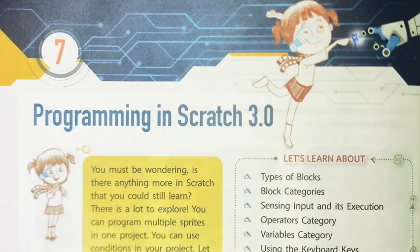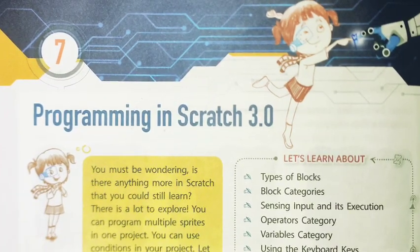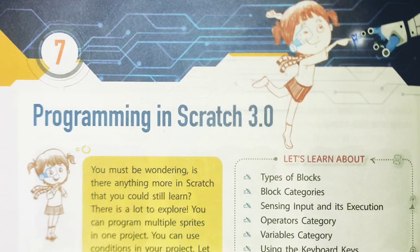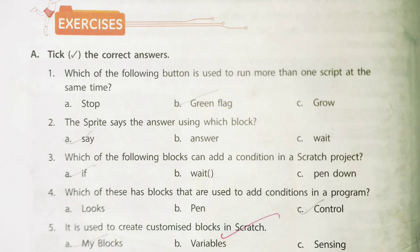Hello friends, today we will do chapter number 7, Programming in Scratch 3.0. Part A: pick the correct answers. First, which of the following button is used to run more than one script at the same time? Green flag.